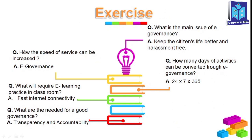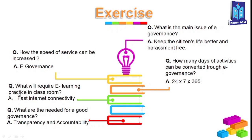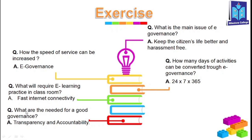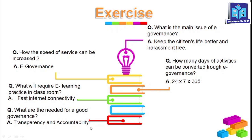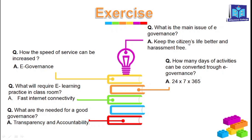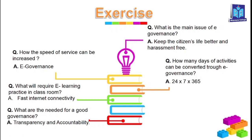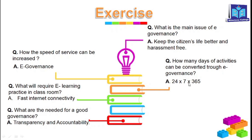Exercise part two. Question one: How can the speed of service be increased? The answer is e-governance. Question two: What will be required for e-learning practice in the classroom? The answer is internet connectivity. Question three: What is needed for good governance? The answer is transparency and accountability. Question four: What is the main issue of e-governance? The answer is to make citizens' lives better and harassment-free. Question five: How many days of activities can be covered through e-governance? The answer is 24 x 7 x 365.